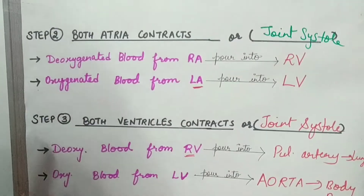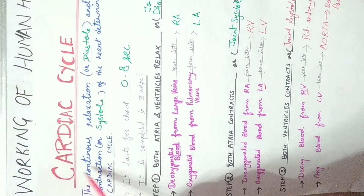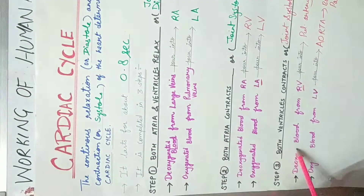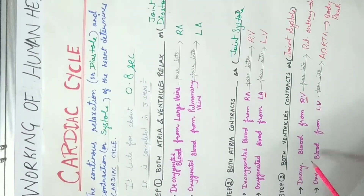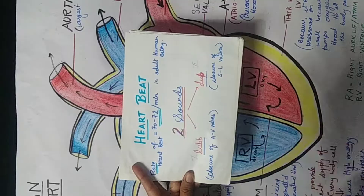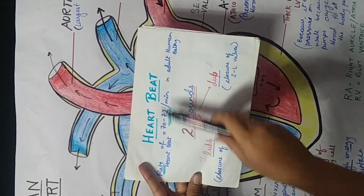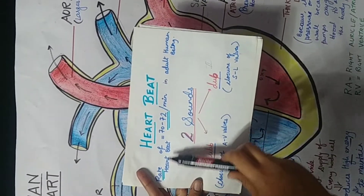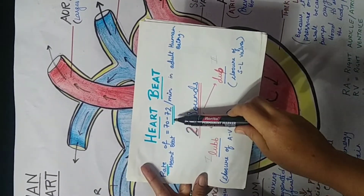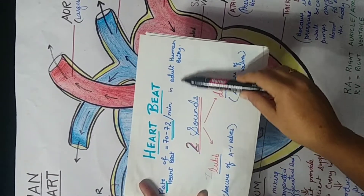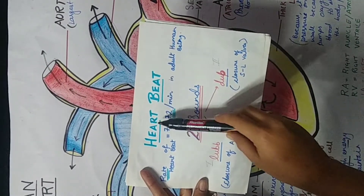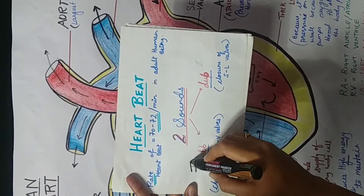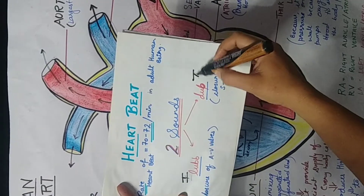These are the three steps — step 1, 2, and 3 — of the cardiac cycle. Now I will explain the heartbeat. Heartbeat is made up of two sounds: lub and dub. The rate of heartbeat in an adult human being is 70 to 72 times per minute.